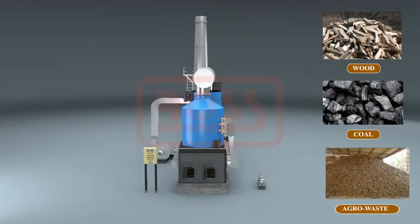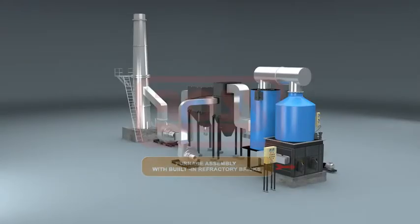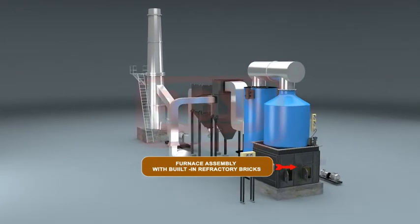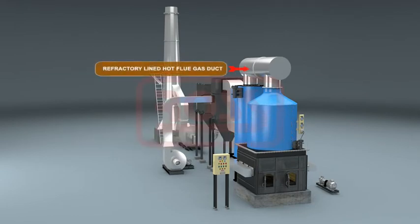The Delta Thermal Oil Heater consists of furnace assembly with built-in refractory bricks, outer steel casing and radiant heater coil assembly in insulated outer shell, refractory lined.